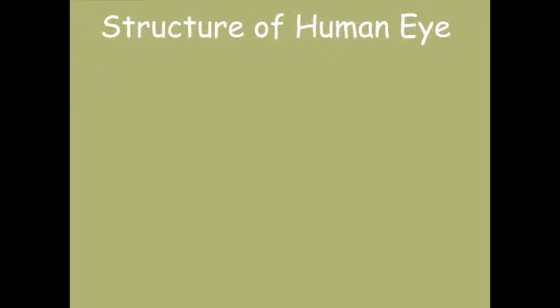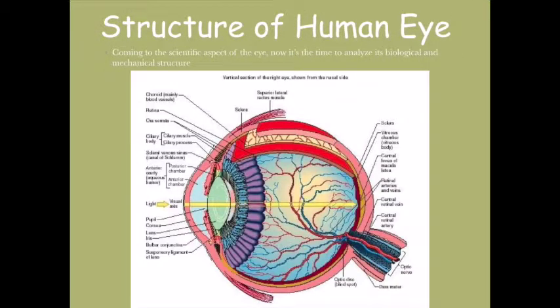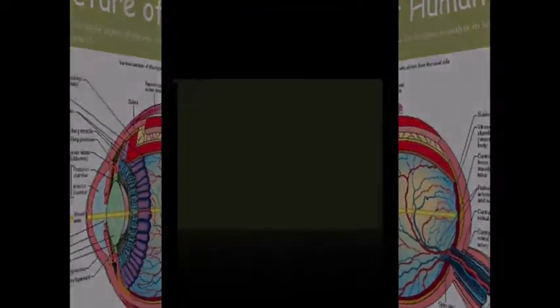Now let's look at the structure of the human eye. Coming to the scientific aspect, now is the time to analyze the biological features of the human eye. Given below is a picture which you'll usually find in any book - this is how it looks for a biologist.